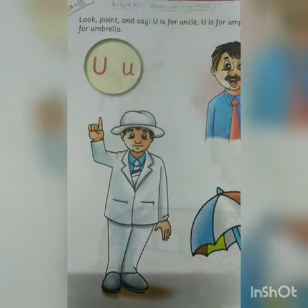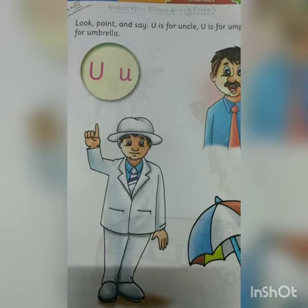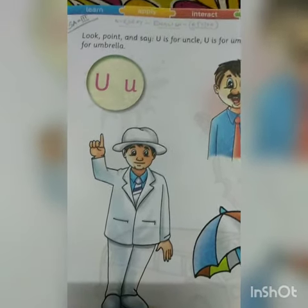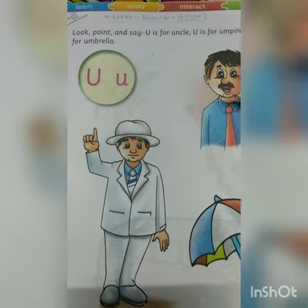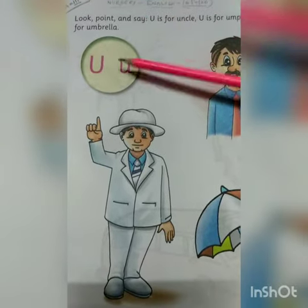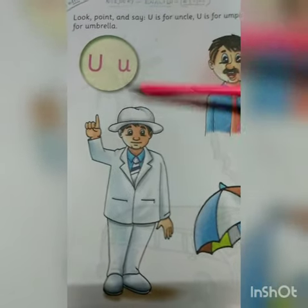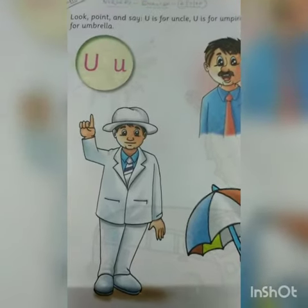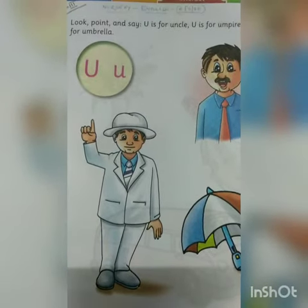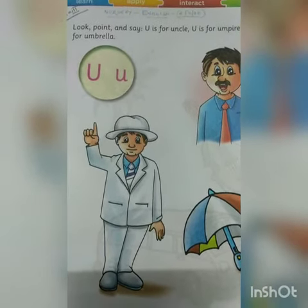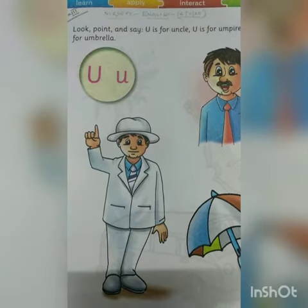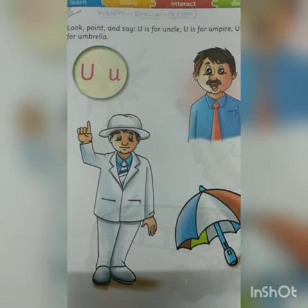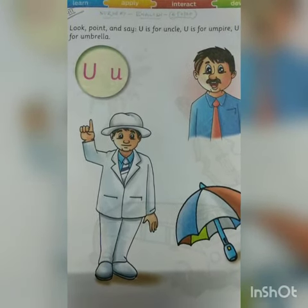You have to learn by heart all three words: U is for uncle, U is for umpire, U is for umbrella. This is our classwork for nursery. You have to learn by heart all these three words and identify the pictures also. Thank you.